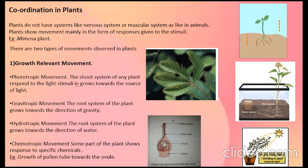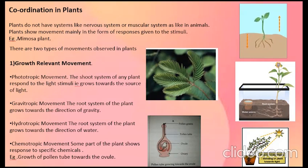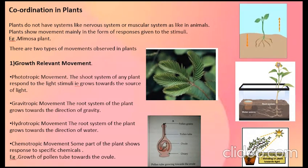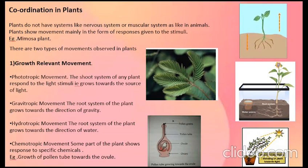Number three is hydrotrophic movement. As the name suggests, 'hydro' means water — the root system of the plant grows towards the direction of water. Number four is chemotrophic movement — some part of the plant shows a response to specific chemicals, such as the growth of the pollen tube towards the ovule.